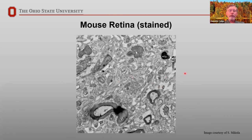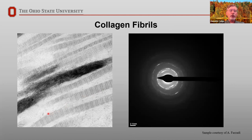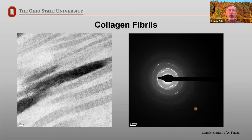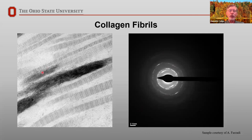We can extend that to collagen fibrils. Here's a TEM image of collagen fibrils showing the characteristic bands. You can actually perform diffraction analysis to measure those bands and calculate what kind of structure they have — this becomes complementary to the image, and you can sometimes get spacings much more precisely from the diffraction pattern than from the image directly.